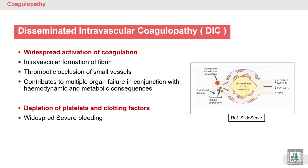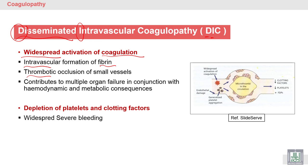DIC — disseminated intravascular coagulopathy — means widespread, generalized activation of coagulation. Activation of coagulation means there is intravascular formation of fibrin. This intravascular fibrin formation leads to thrombotic occlusion of the small blood vessels.